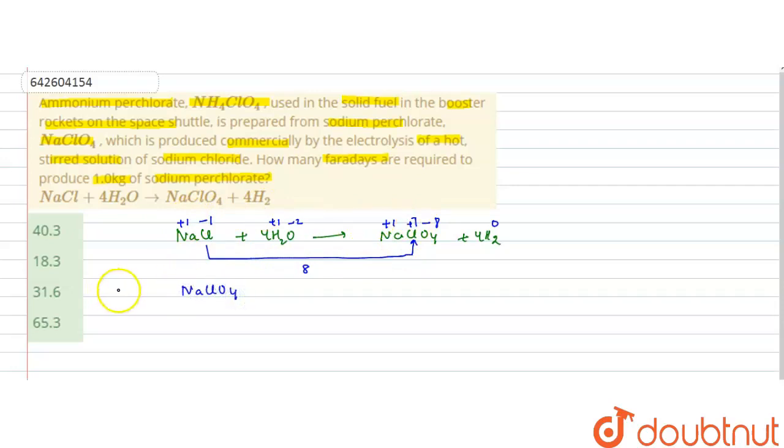One mole of NaClO4 requires eight mole electrons, and the charge on one mole electron is known as one Faraday.